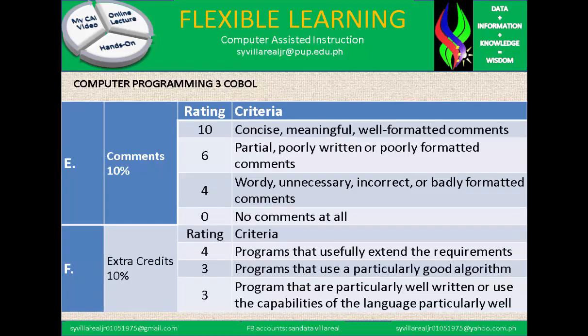E and F are both 10%. E: Comments. 10 for concise, meaningful, or well-formatted comments. Partially or poorly written, or poorly formatted comments receives a lower score. 4 for wordy, unnecessary, incorrect, or badly formatted comments. 0 for no comments at all. F: Extra credit, 10%. 4 for programs that usefully extend the requirements. 3 for programs that use a particularly good algorithm. 5 for programs that are particularly well written or use the capabilities of the language particularly well.